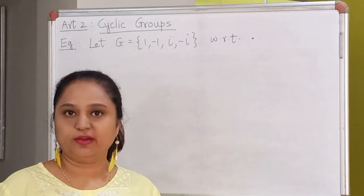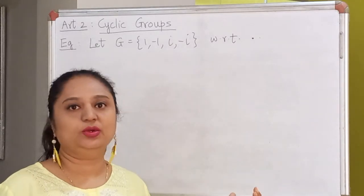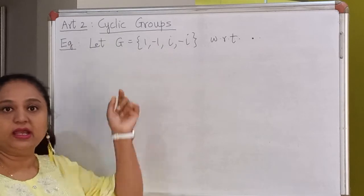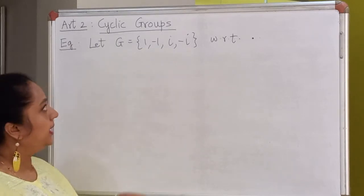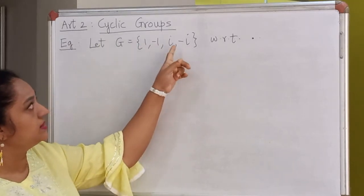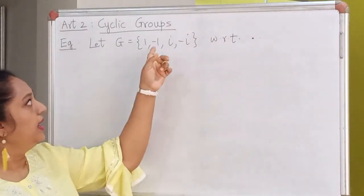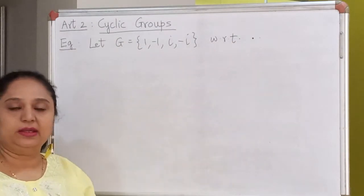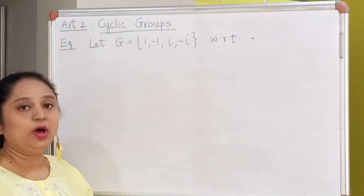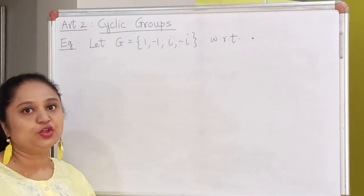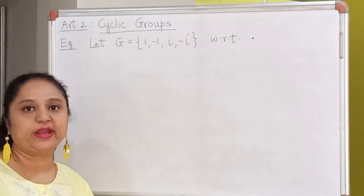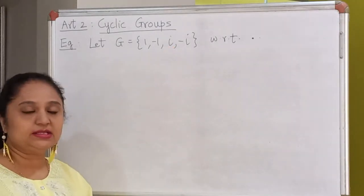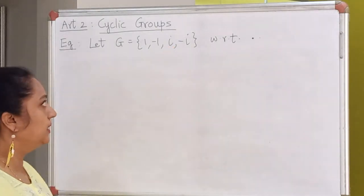Before I give you the definition, I would like to look at an example. Let's consider the finite group G containing the complex numbers 1, -1, i, -i, where i is the imaginary unit, and the group operation is multiplication of complex numbers. In this group, we have a very special element, and that is i. We will see very soon why that element is so special.